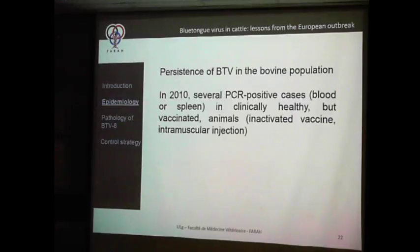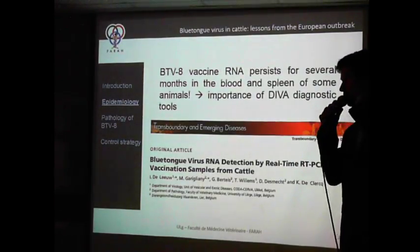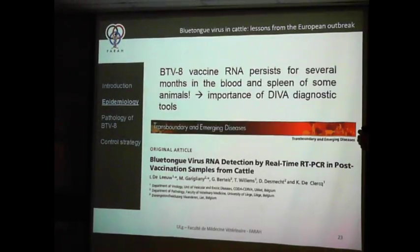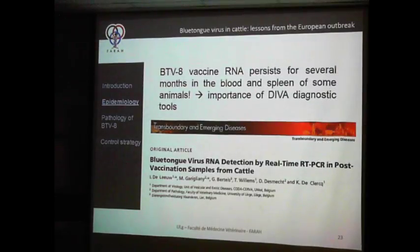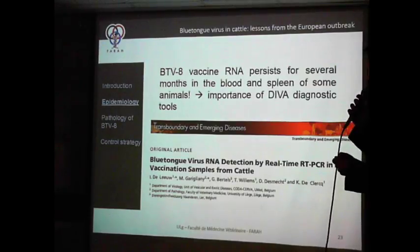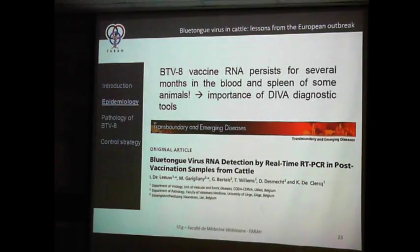We thought perhaps we were detecting vaccine antigen. We performed an experiment showing that when you vaccinate intramuscularly, you can detect RNA from the inactivated vaccine in the spleen and blood for several months — up to three months in the spleen. This is really a problem for detection and surveillance programs. We need diagnostic tools which allow us to differentiate between infected and vaccinated animals, which was not the case for the BTV-8 vaccine, which was just a field strain cultured and inactivated.